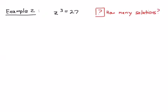Now let's consider a more complicated case: z cubed is equal to 27. The first thing we ask ourselves is how many solutions do we expect. Well, if it's a third order polynomial — because we have z cubed — then we should expect three unique solutions. We're going to solve this the same way as before. We rewrite: z cubed is equal to 27, and we multiply by e to the j two pi k, where k is an integer. Remember, I haven't changed the equation because e to the j two pi k is just one — I've multiplied the right-hand side by one.